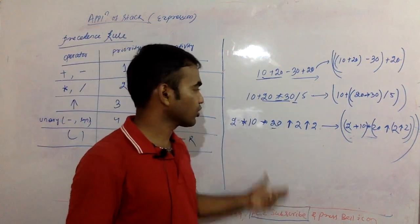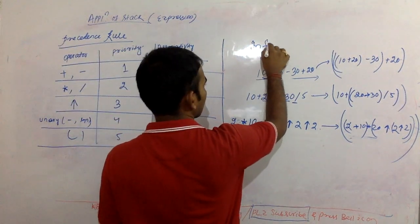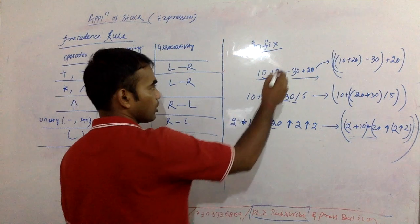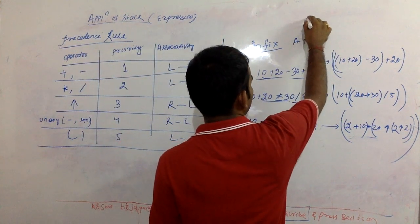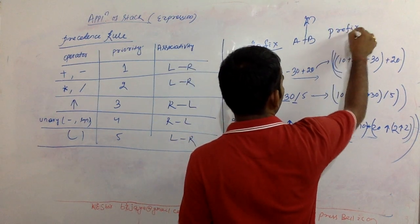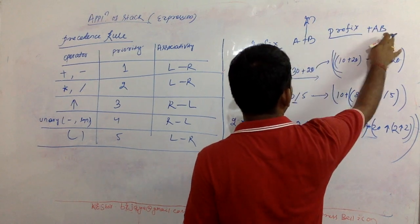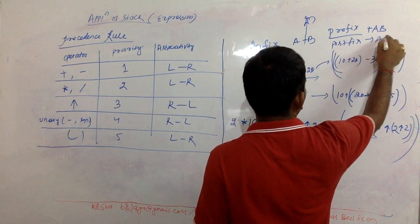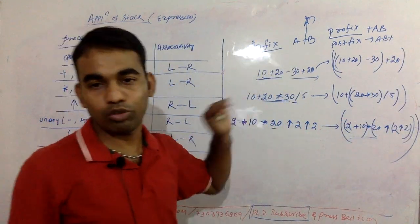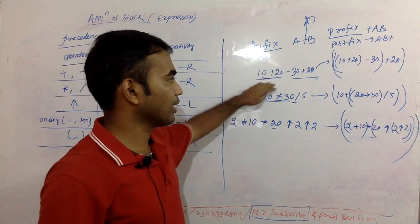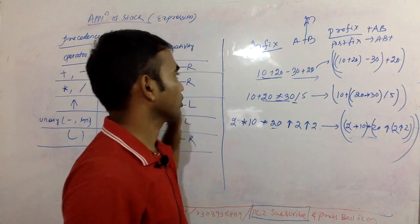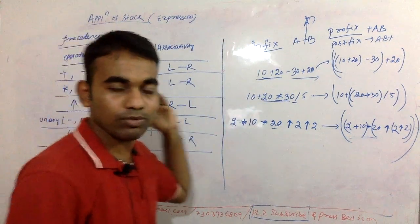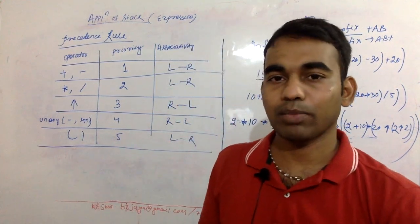This form of expression — where the operator is in the middle — is known as infix, like A plus B. Prefix means the operator comes before the operands, so it would be plus A B. Postfix means the operator comes after, so it's A B plus. Once we put the correct brackets into an infix expression, it becomes much easier to convert to prefix or postfix. Don't forget the operators and their associativity — this is very important.